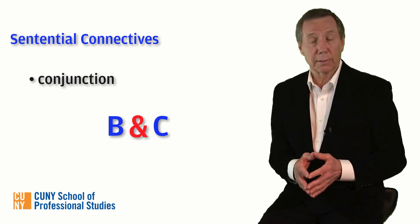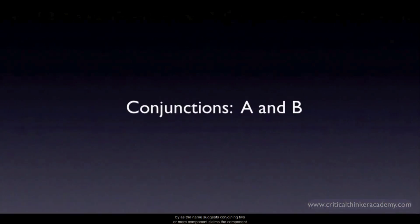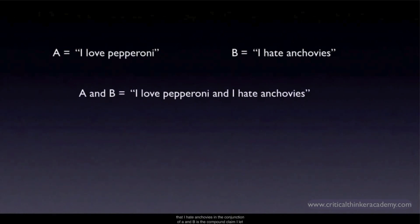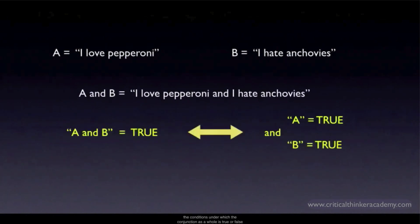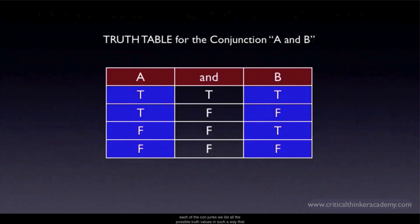A conjunction is a compound claim formed by, as the name suggests, conjoining two or more component claims. The component claims are called the conjuncts. Here's a simple conjunction: let A stand for 'I love pepperoni' and B stand for 'I hate anchovies.' Then the conjunction of A and B is the compound claim 'I love pepperoni and I hate anchovies.' We want to know the conditions under which the conjunction as a whole is true or false. The conjunction A and B is true just in case each of the conjuncts is true; if either one is false, then the conjunction as a whole is false. It's handy to represent this logic with a truth table that gives the truth value of the compound claim for every possible combination of truth values of the component claims.